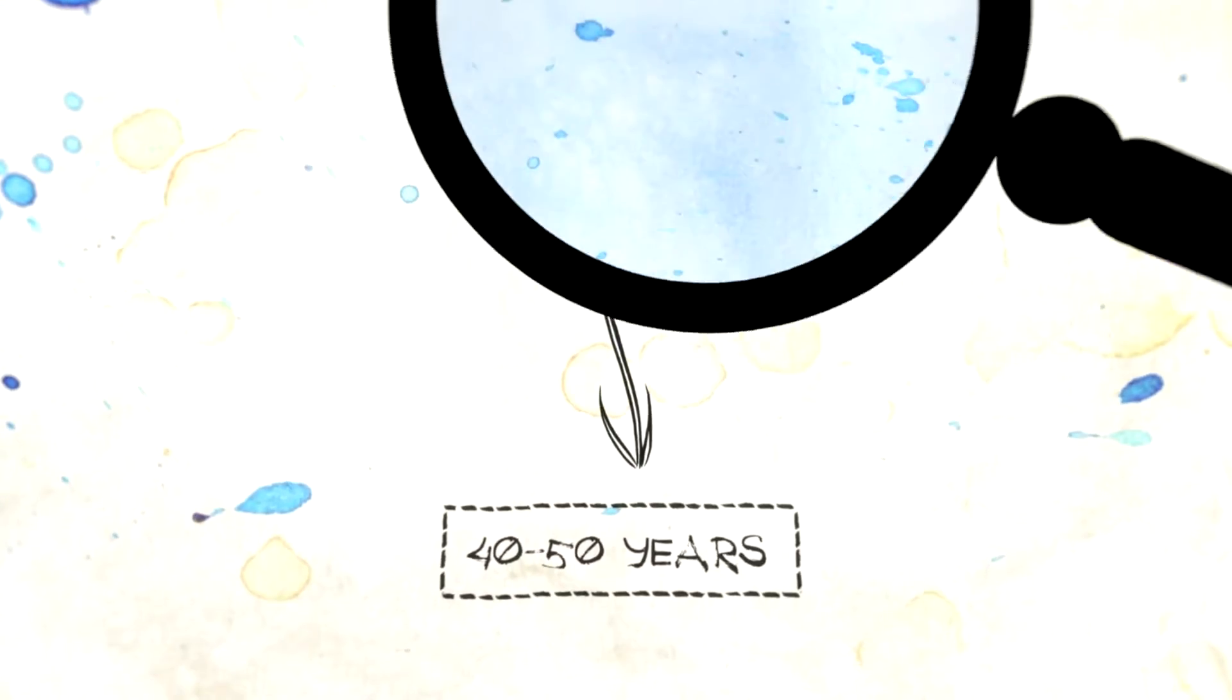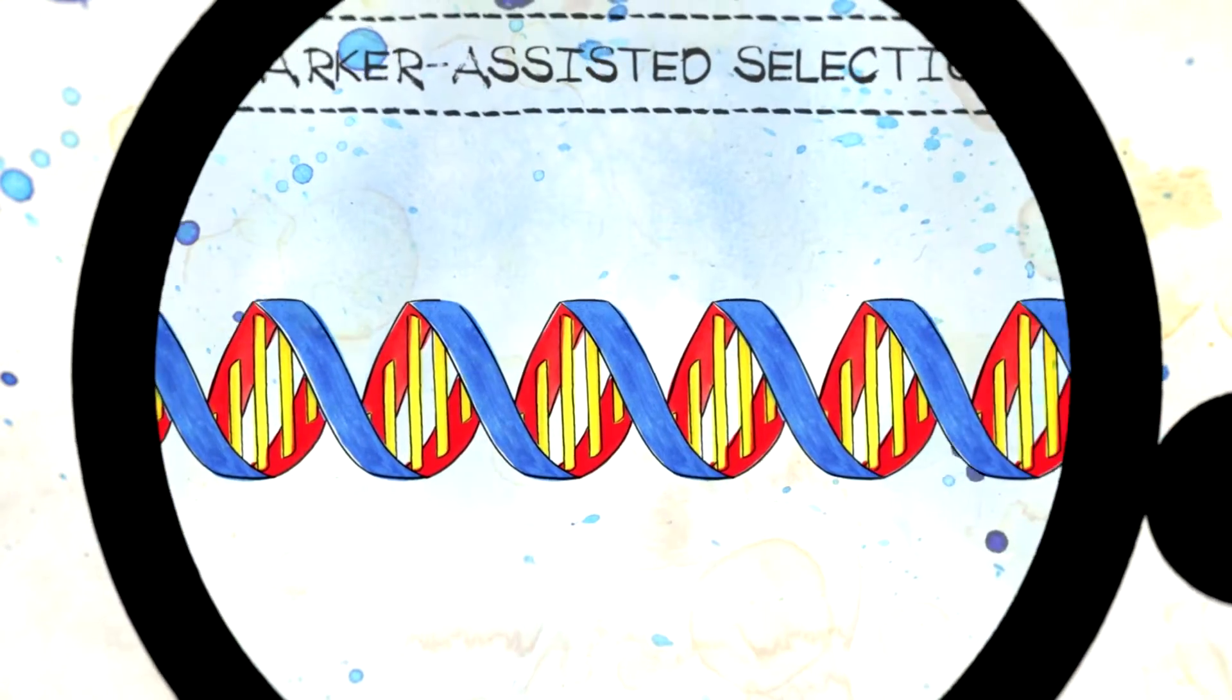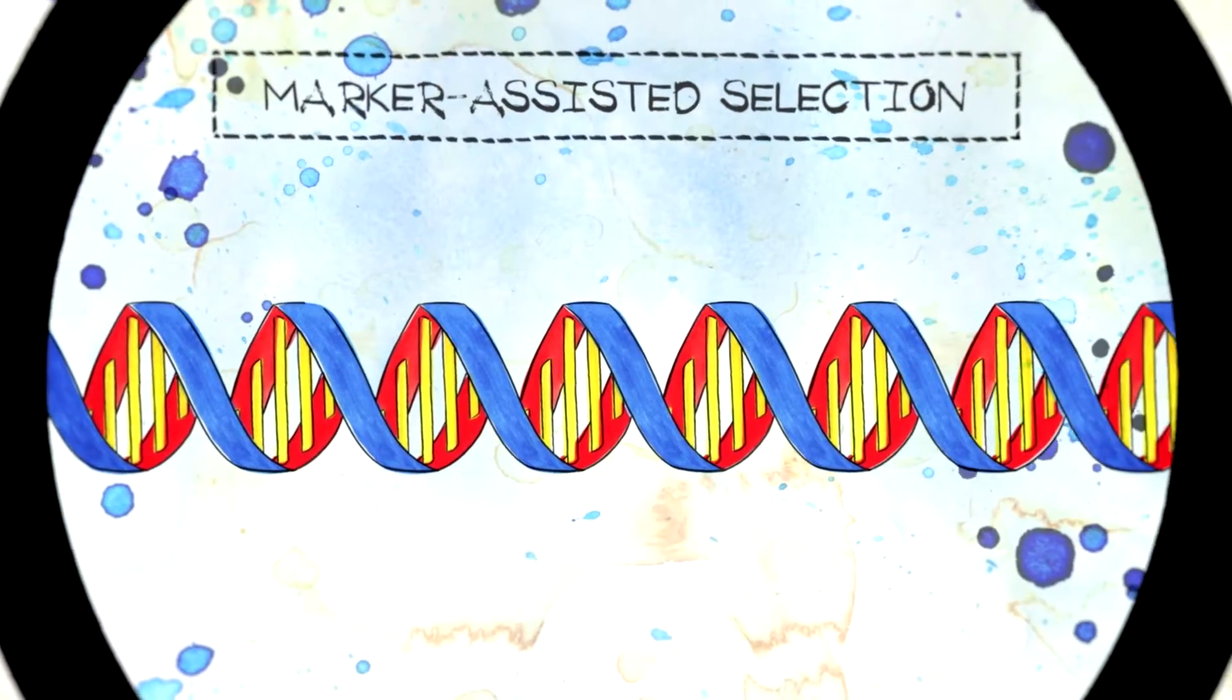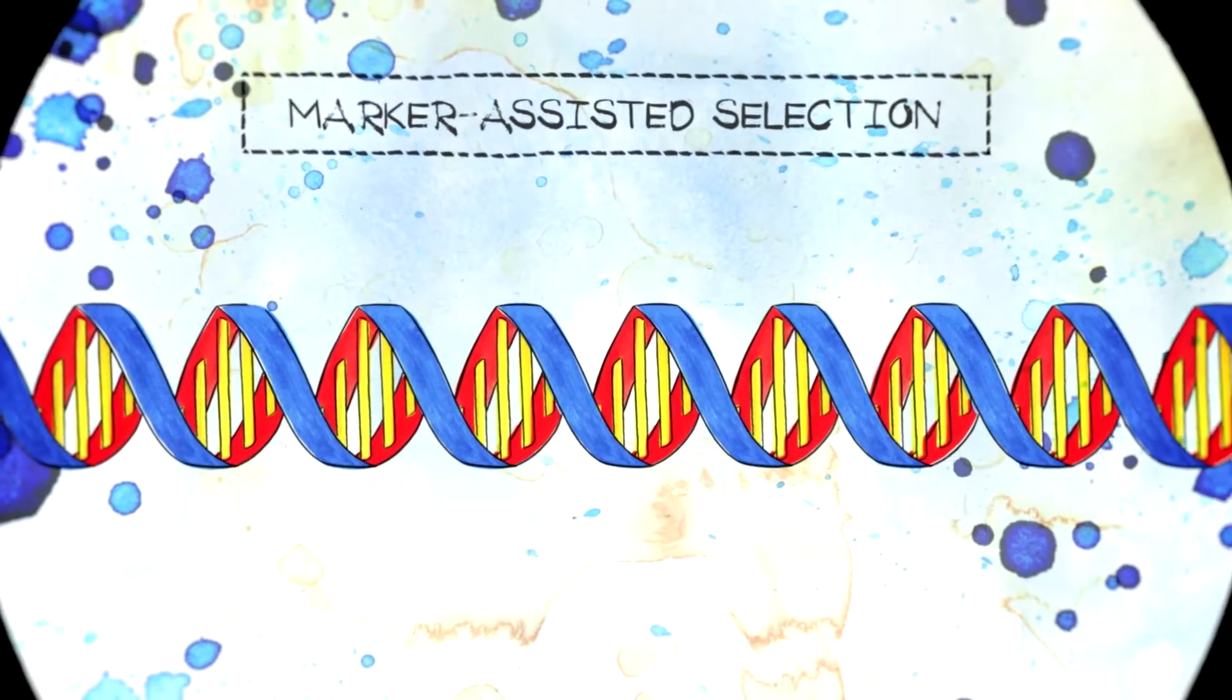Today, crossbreeding uses molecular biology tools called marker-assisted selection to help guide and speed up the process of selecting the best parents and traits.